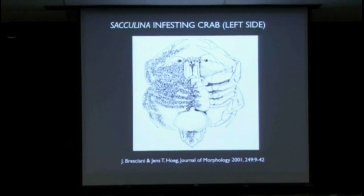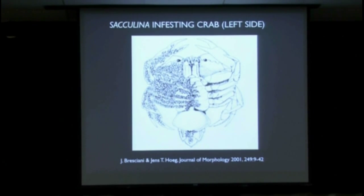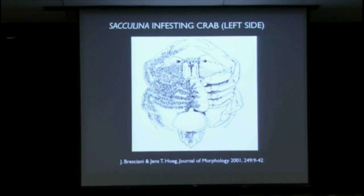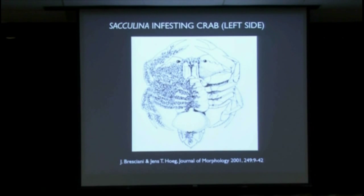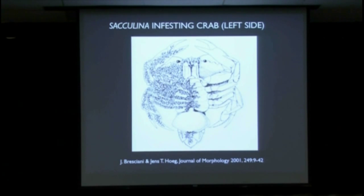This drawing shows what it looks like just on one side, on the inside of the crab. The roots even wrap around the eye stalks. And yet the crab goes about its business. You can't really tell if you're a novice that a crab is infected with this.